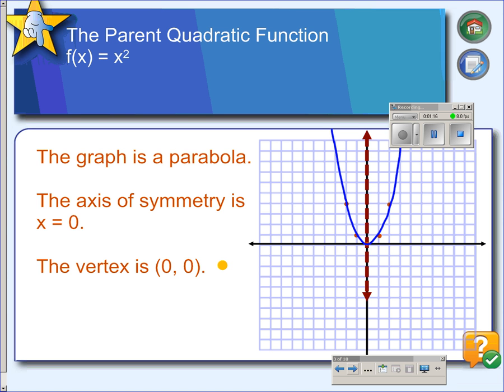The parabola also has a point that's either the lowest point or the highest point on the graph, and this point is called the vertex. In this case, for the parent function, the vertex is at the origin, 0, 0.